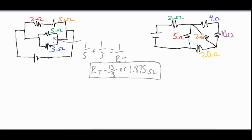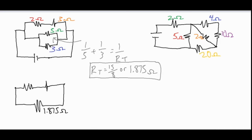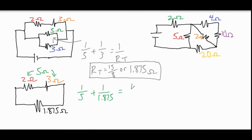Now we can redraw the circuit. We have the two and three ohm resistors up top, and that collapsed chunk on the bottom is now a 1.875 ohm resistor. The two ohm and three ohm resistors combine to look like a five ohm resistor acting in series. That brings us to our next step — we have another parallel branch: one over five for the top branch plus one over 1.875 for the chunk below equals one over R_T.